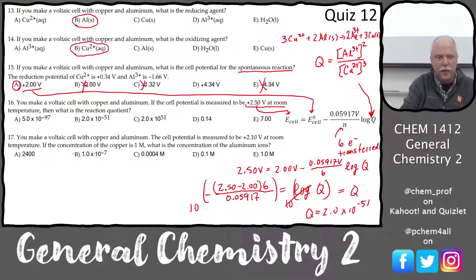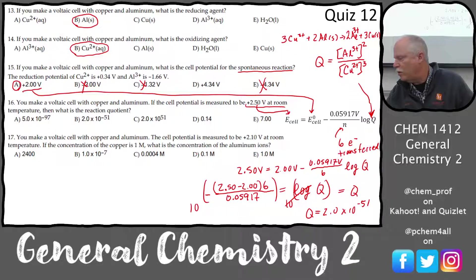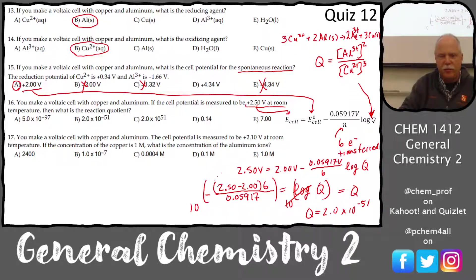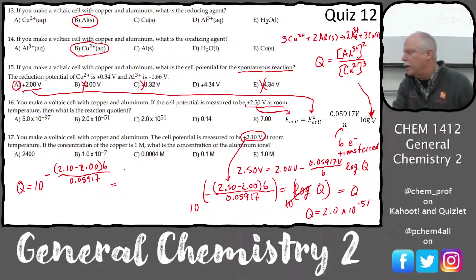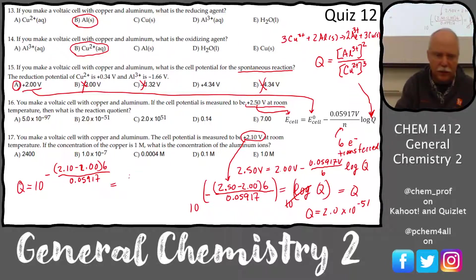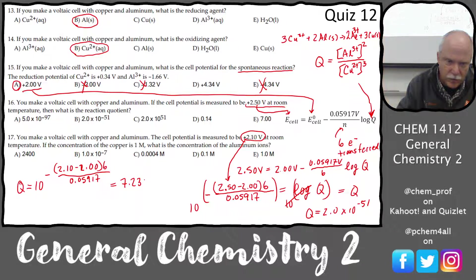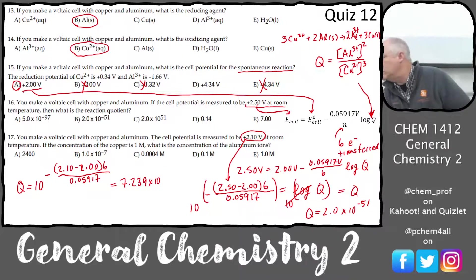If we make this voltaic cell with copper and aluminum and the cell potential is measured to be 2.1 volts at room temperature with the concentration of copper at 1 molar, what is the concentration of the aluminum? It's essentially the same problem with a different number. Q equals 10 to the power of [(-2.1 − 2.0) × 6 / 0.05917], and I get 7.239 × 10⁻¹¹.